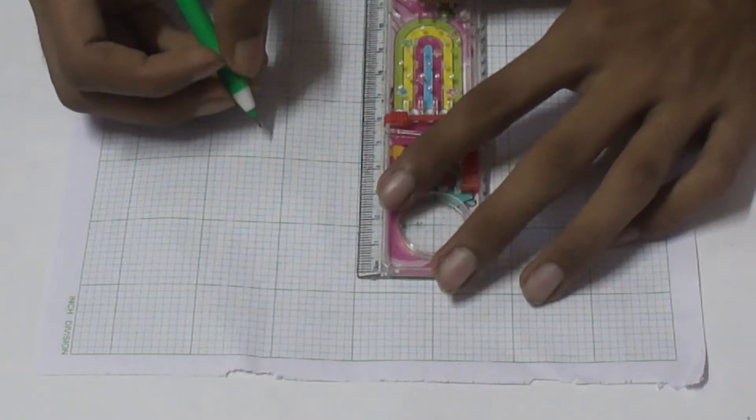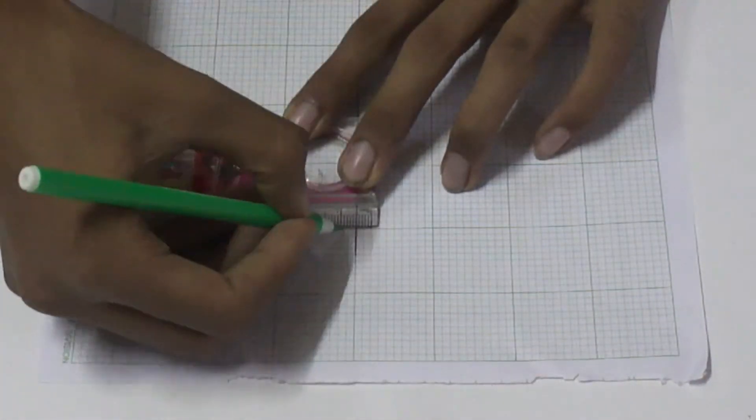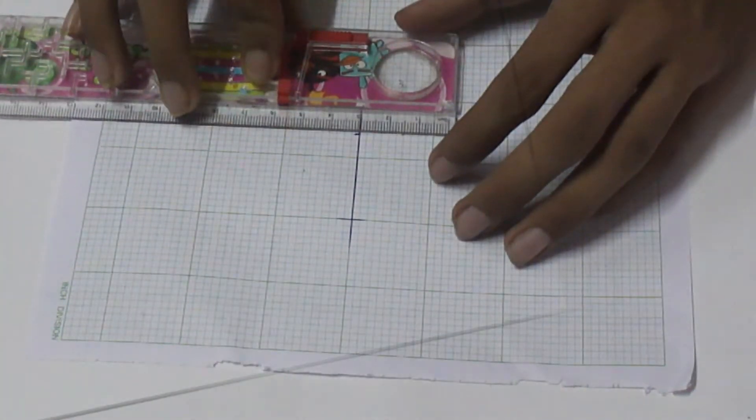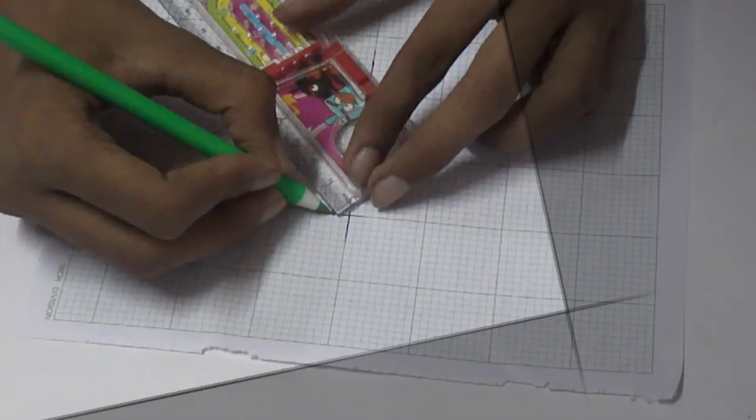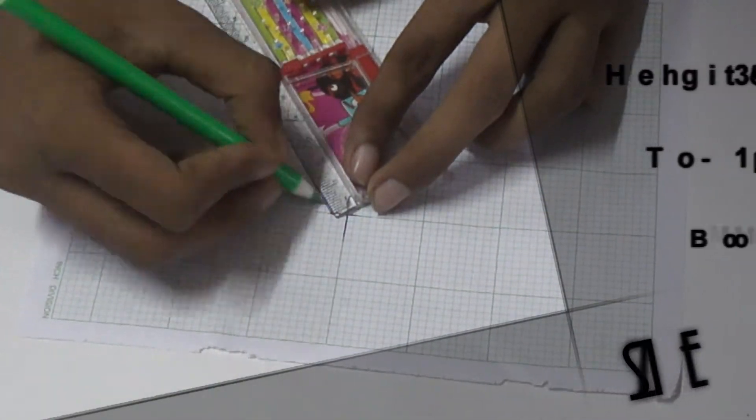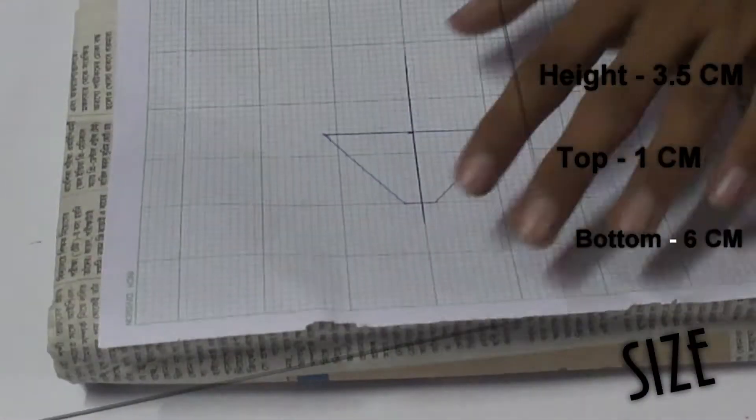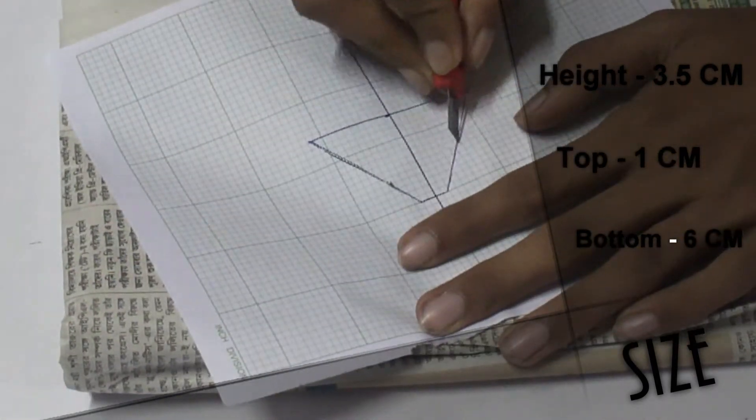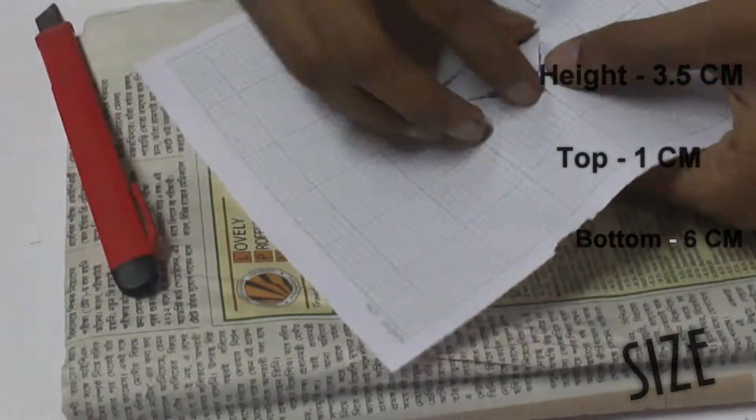So at first, what you need to do? On graph paper, you need to draw a triangle. It should be 1 cm at the top, 3.5 cm in height, and 6 cm at the bottom. This is for a 5-inch device. You can multiply these measurements according to your device size.